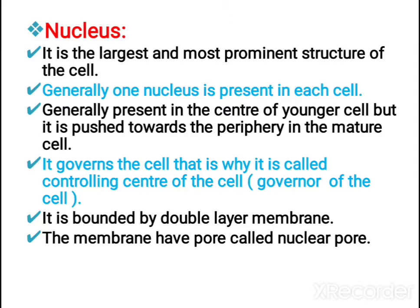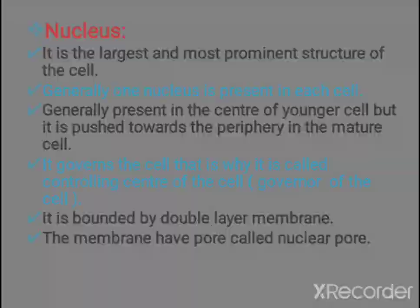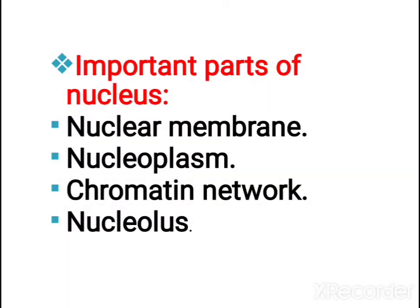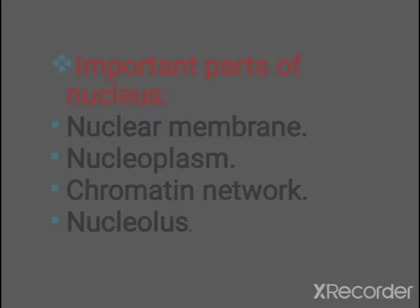The nuclear membrane has pores called nuclear pores. The important parts of the nucleus are: nuclear membrane, nucleoplasm, chromatin network (that is chromosome), and nucleolus.